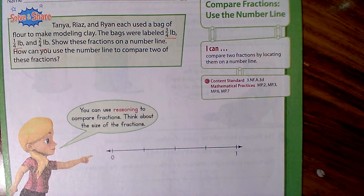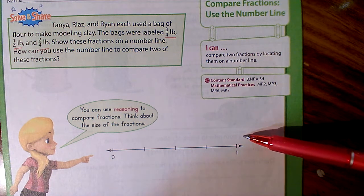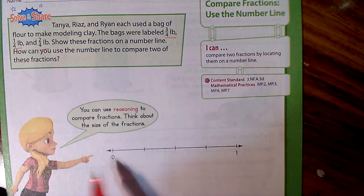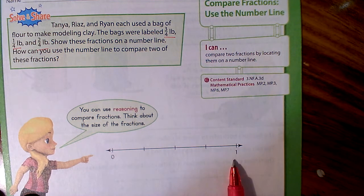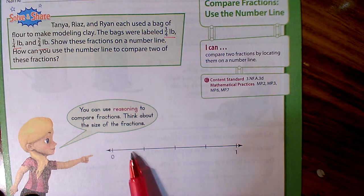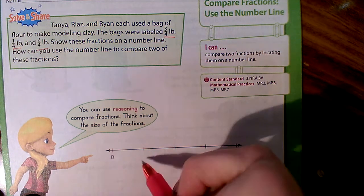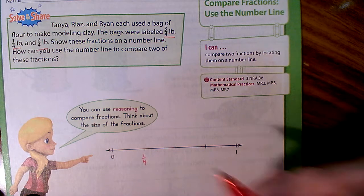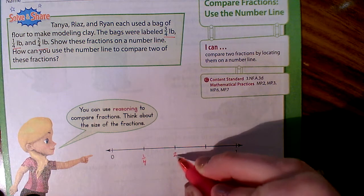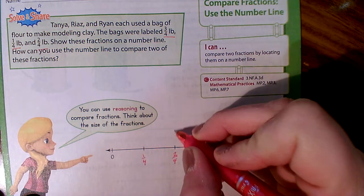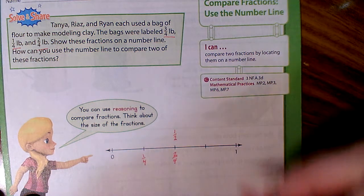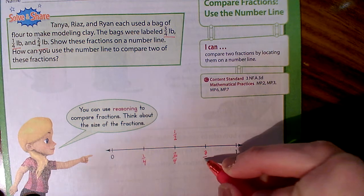How can you draw a number line that shows fourths? You can mark a number line like this one, which has zero to one represented, and divide it into four equal sections. Labeling the marks with one-fourth, two-fourths — which we also know is the same as one-half — and three-fourths.